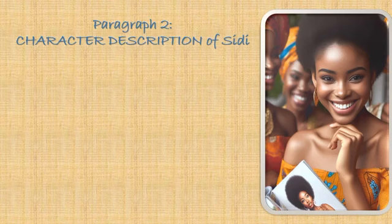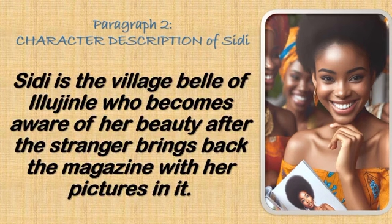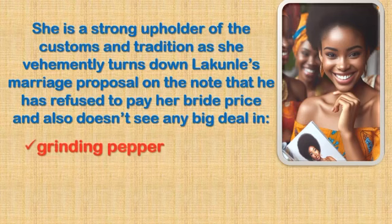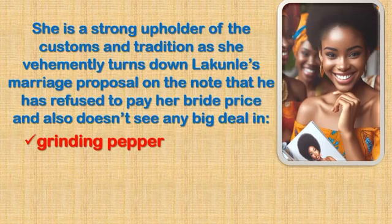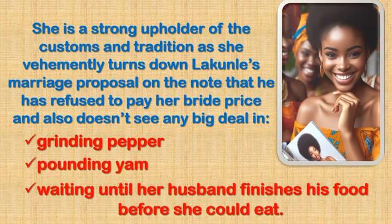You then move to paragraph two, which is character description. As I highlighted in my previous videos, any question that carries a character's name means you must describe that character in your second paragraph. This question features Sidi, so we describe her: Sidi is the village belle of illusion who becomes aware of her beauty after the stranger brings back the magazine with her picture in it. She is a strong upholder of custom and tradition, as she very firmly turns down Baroka Lakunle's marriage proposal on the grounds that he has refused to pay a bride price and doesn't see the importance of grinding pepper, pounding yam, or waiting for her husband to finish eating before she can eat.